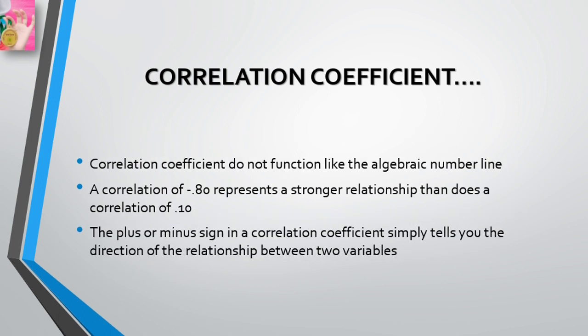More specifically, the closer a correlation coefficient is to 1.00 — whether positive or negative — the stronger the correlation between two factors. A correlation coefficient of +0.80 or -0.80 would represent a strong association, whereas +0.10 or -0.10 would represent a weak correlation. Note that correlation coefficients do not function like an algebraic number line — a correlation of -0.80 represents a stronger relationship than a correlation of +0.10. The plus or minus sign simply tells you the direction of the relationship.